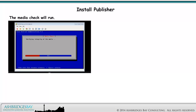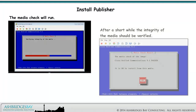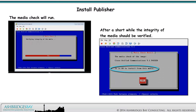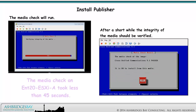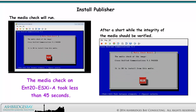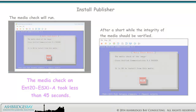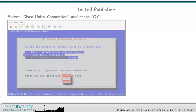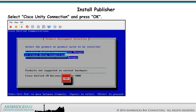The media check will run. After a short while, the integrity of the media should be verified. The media check on Enterprise 20 ESXi-A took less than 45 seconds. Select Cisco Unity Connection and press OK.